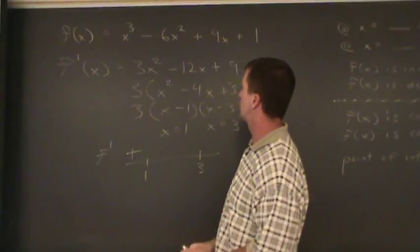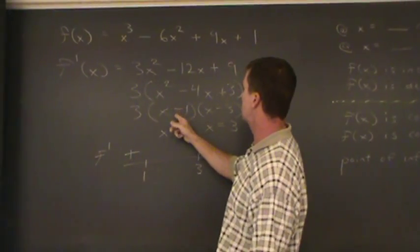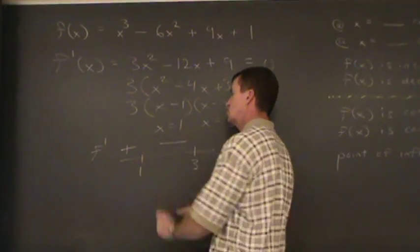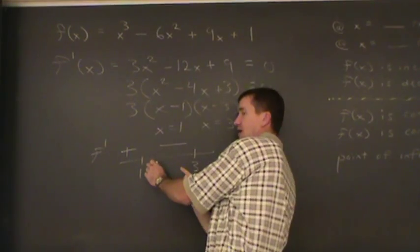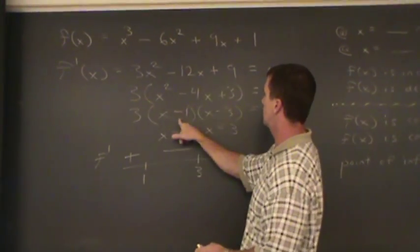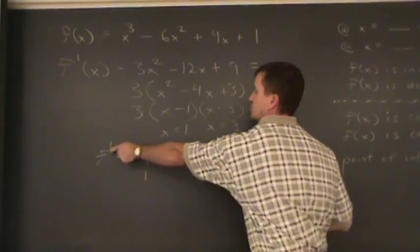Number 2, 1 and 3, how about 2? I'll test 2, I plug 2 in here. I get the first derivative to be a negative value. First derivative is negative at x equal to 2, we're on this interval. And past 3, I test 4, I plug in 4 into the first derivative expression, first derivative is positive.